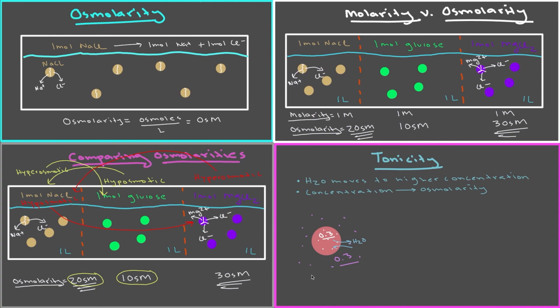Whenever the cell neither gains nor loses water from the solution, we say the solution on the outside is isotonic. This is usually what we want — cells living in an environment where they don't gain water, they don't lose water, and they're just perfectly normal doing their thing.